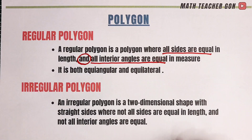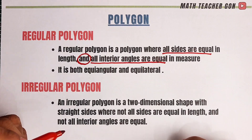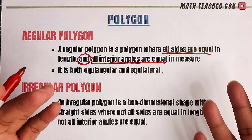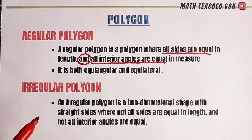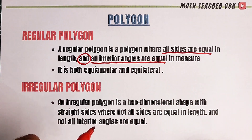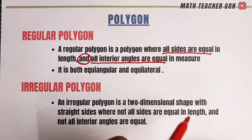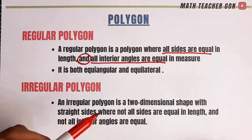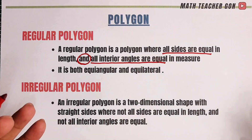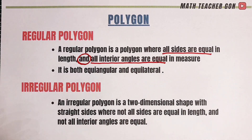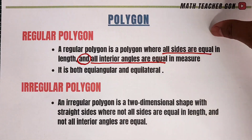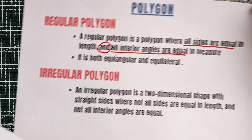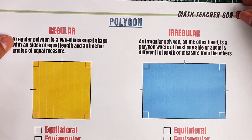Next, what about irregular polygon? That is the opposite of a regular polygon. An irregular polygon is a two-dimensional shape with straight sides where not all sides are equal in length and not all interior angles are equal. So let me show you the first set of examples that we have.